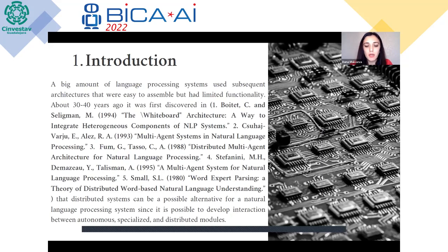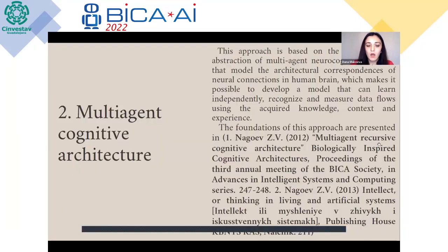A large number of language processing systems used sequential architectures that were easy to assemble but had limited functionality. About 30–40 years ago, it was first discovered that distributed systems can be a possible alternative for a natural language processing system, since it's possible to develop interactions between autonomous, specialized and distributed modules. To model an AI system able to represent elements of natural language while solving complex problems such as speech recognition, understanding and synthesis, a multi-agent cognitive approach can be used.